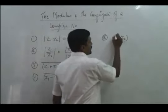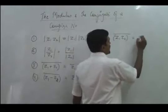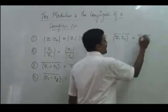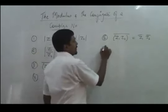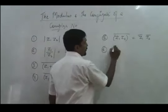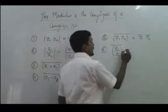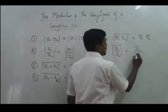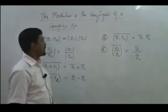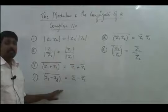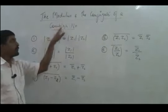First, find the product of two complex numbers then find its conjugate, or you find the conjugate of the complex numbers then multiply — it gives you the same result. The last is for division: if we divide two complex numbers and find their conjugate, it is the same as the conjugate of the complex numbers with their division. So these are the six results based on the modulus and the conjugate of the complex number.